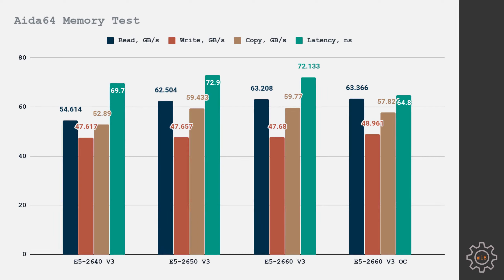AIDA64 memory tests show quite similar results, but there are two things to mention. The overclocked 2660 on the MSI X99A shows the best result — by increasing memory voltage to 1.35V, I was able to tighten the timings to DDR4 2133 CL11, giving the best memory latency at just 64 nanoseconds. The E5 2640 on the Klycerer X99-D8 shows 69 nanoseconds latency, but since it's limited to DDR4 1866, memory read and copy are slightly worse. If you're interested in the detailed numbers, pause the video and take a look.